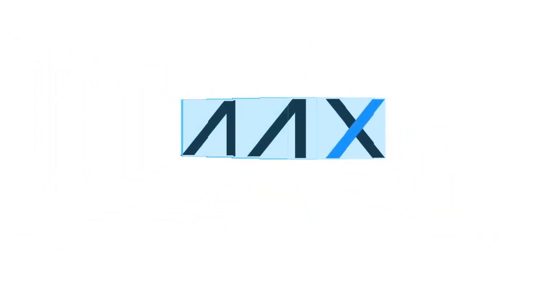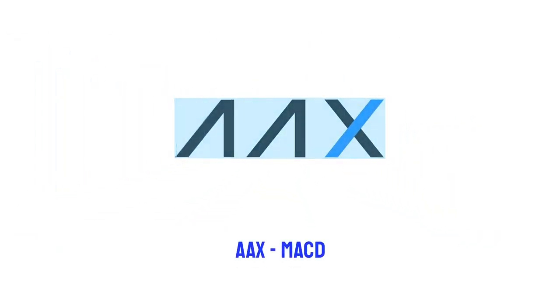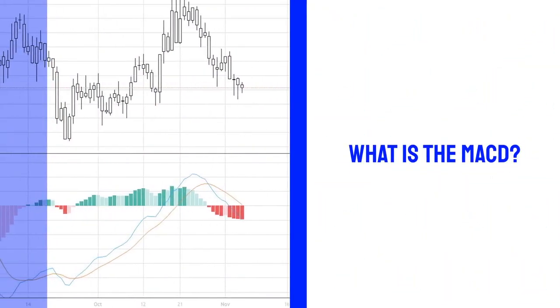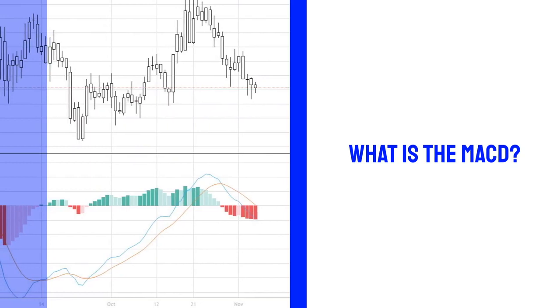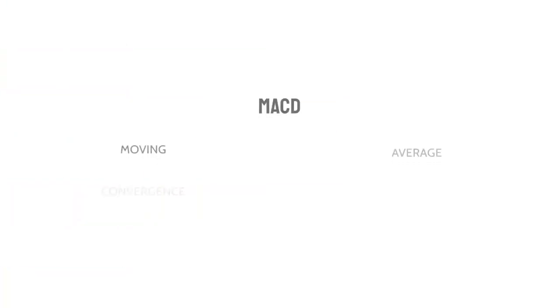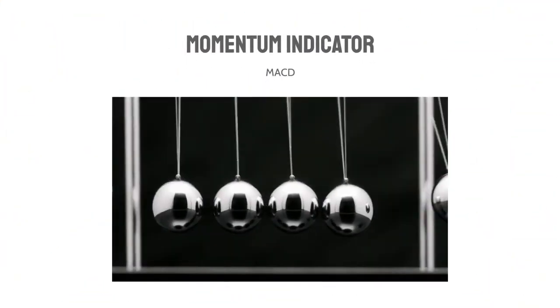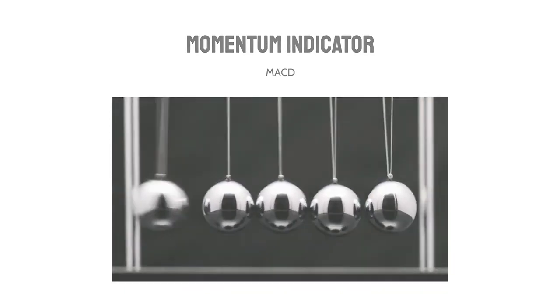This is an AX video on the MACD indicator. So what is the MACD indicator? MACD stands for Moving Average Convergence Divergence. The MACD itself is a momentum indicator.